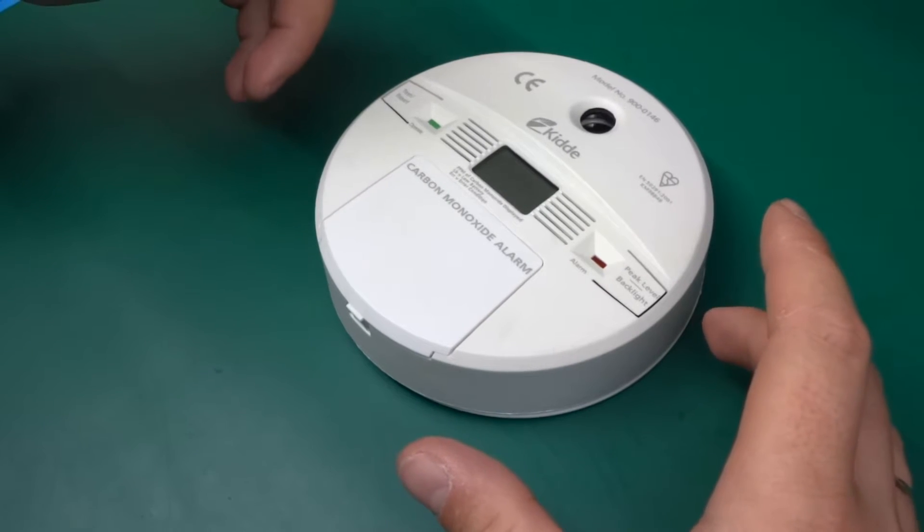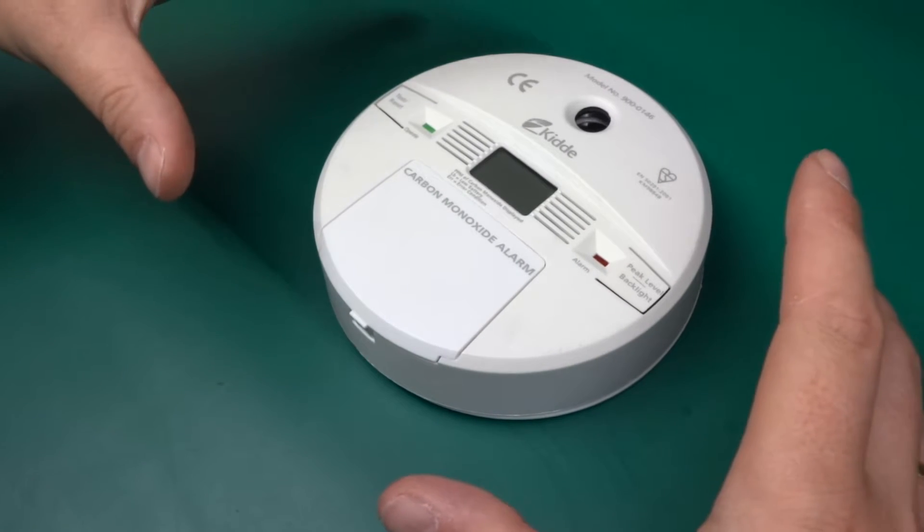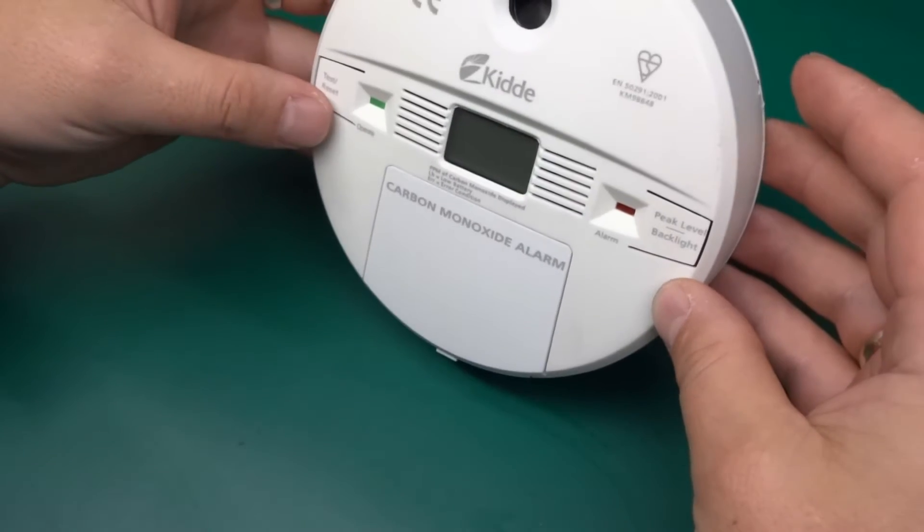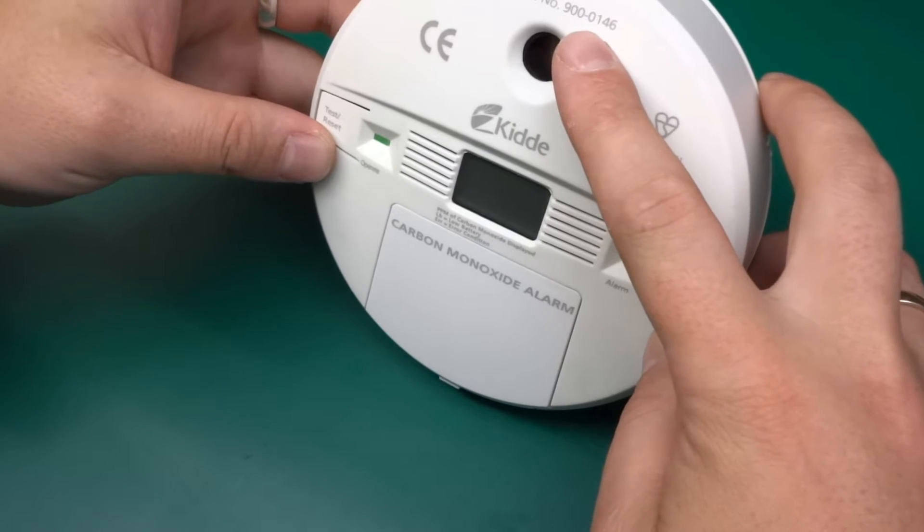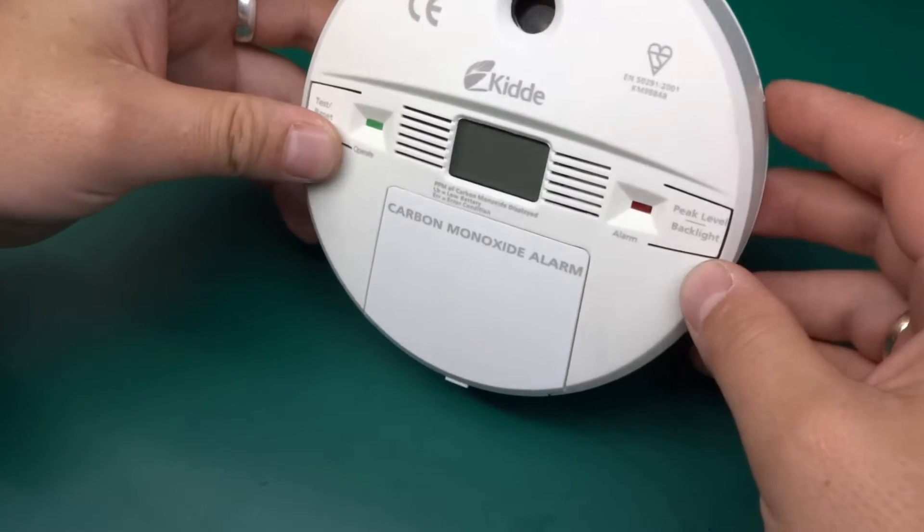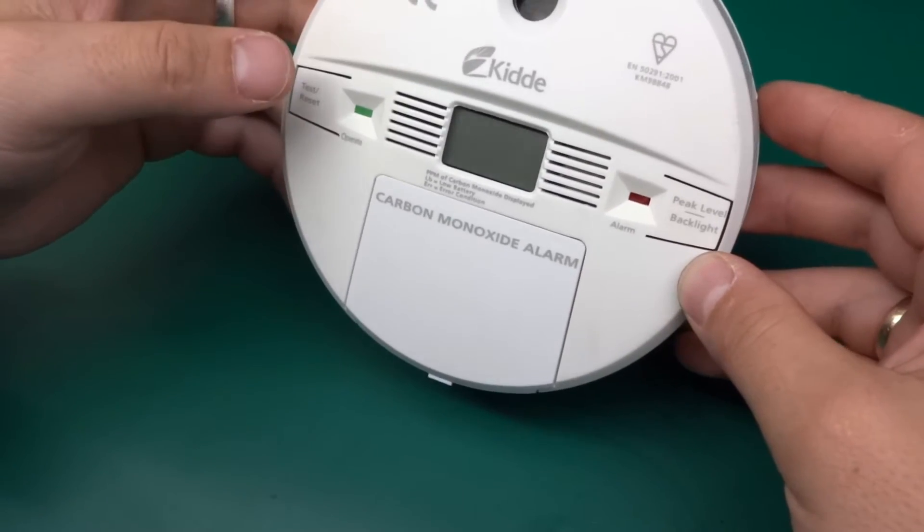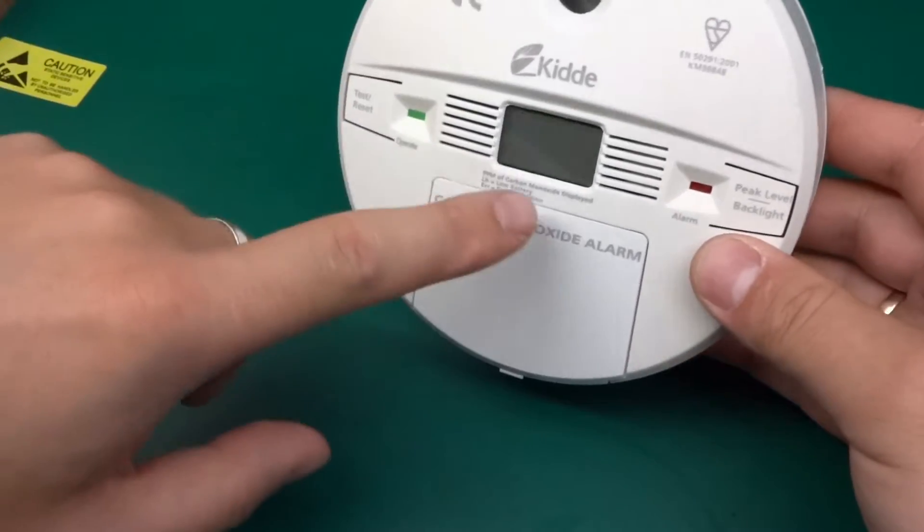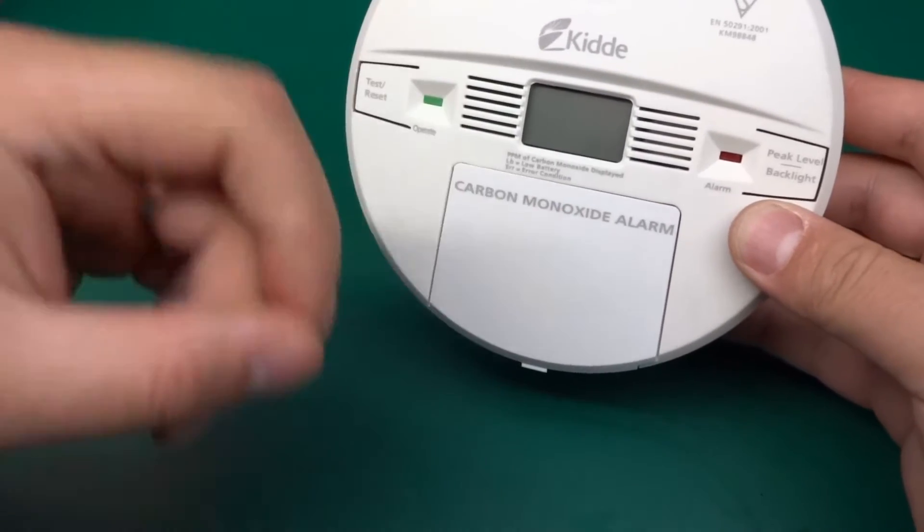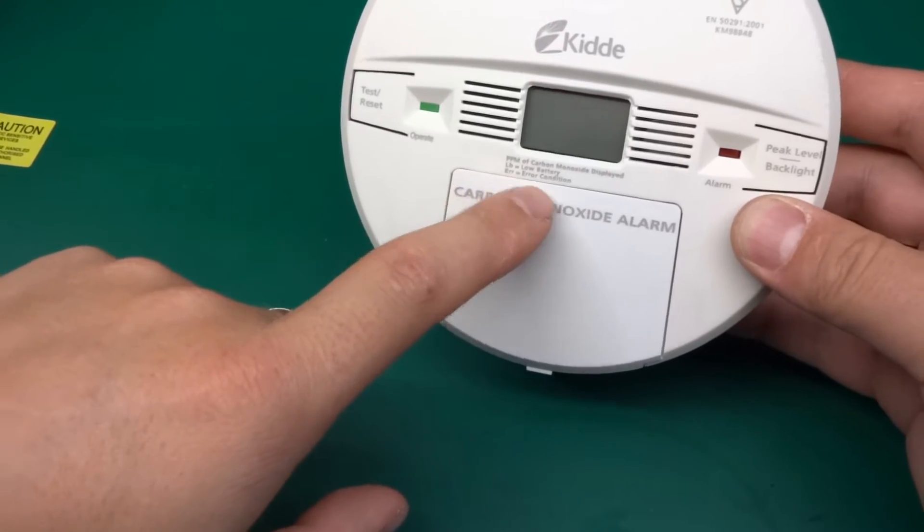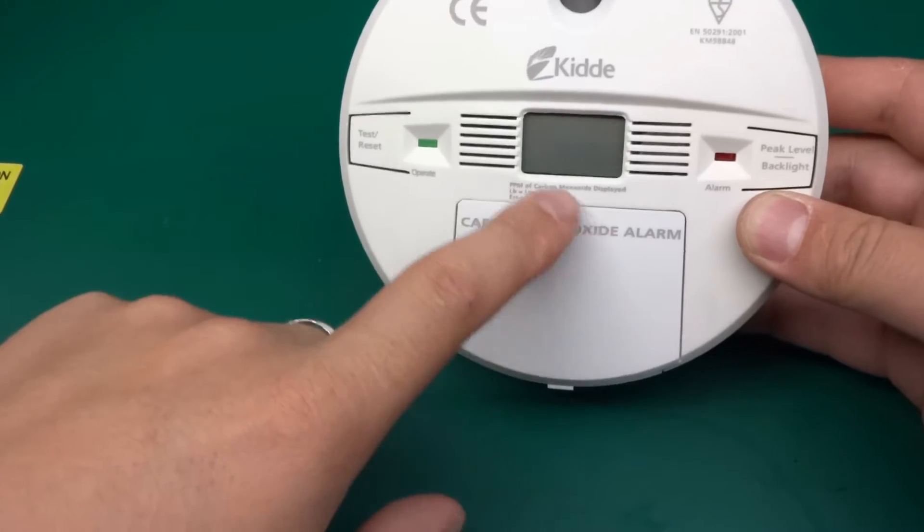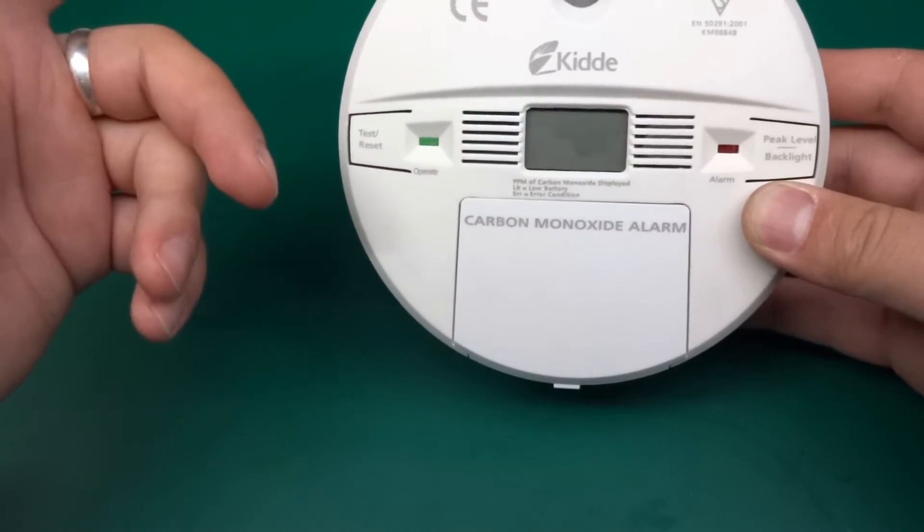So we'll take it apart then we'll rip apart the fuel cell to see what sort of things are happening within the cell. It's a KIDI model number 900 0146, a fairly advanced carbon monoxide detector that will show you on the display parts per million of carbon monoxide, low battery, or error. This one is faulty and has reached its life limit, showing error state which means it's no longer operational.